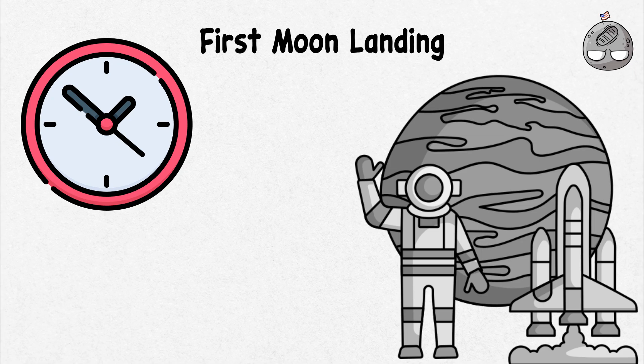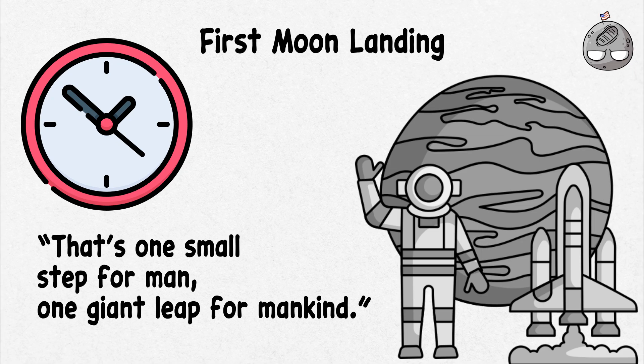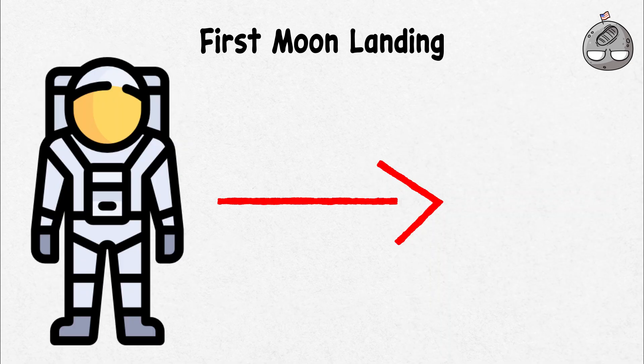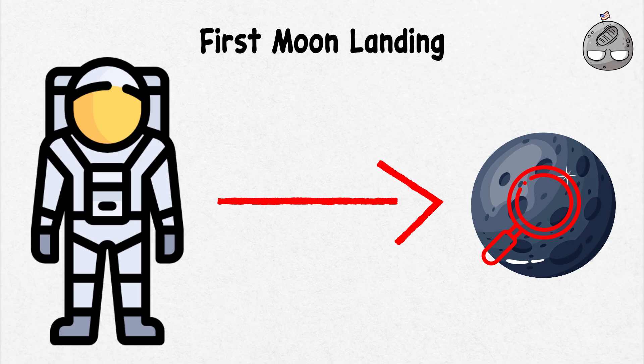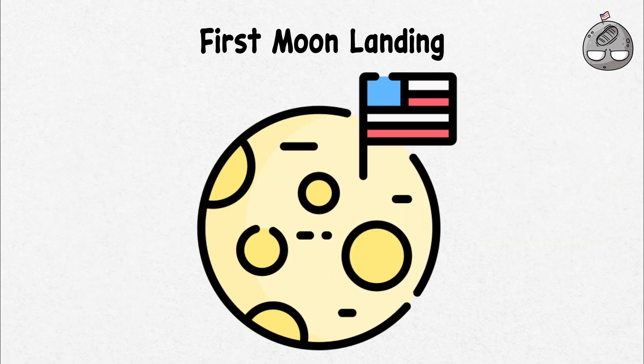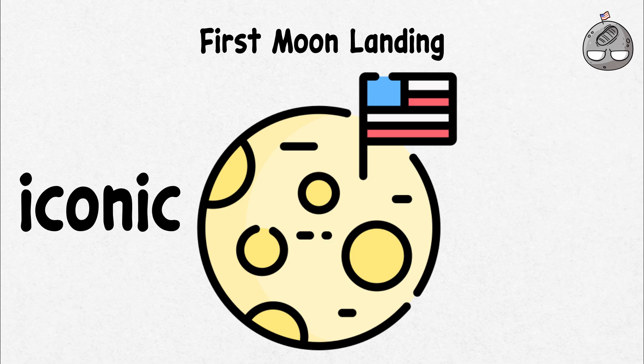A few hours later, Armstrong stepped onto the lunar surface, saying the famous words, that's one small step for man, one giant leap for mankind. Aldrin soon followed, and together they explored the moon, gathering samples and conducting experiments. The sight of the American flag planted on the moon became iconic.